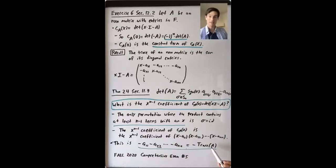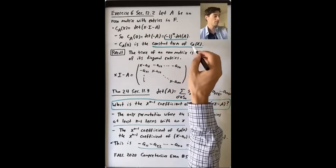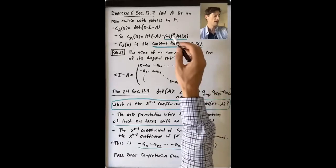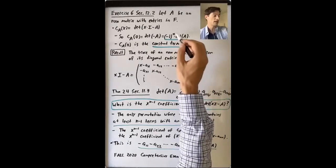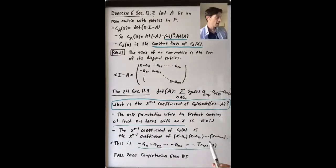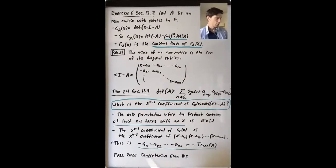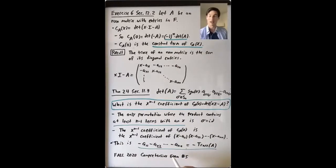So we're seeing that the constant coefficient of the characteristic polynomial is (-1)^n times the determinant of the matrix, and the X^{n-1} coefficient is minus the trace — minus the sum of the diagonal entries. This is a really good argument to know; it came up on the Fall 2020 Algebra Comprehensive Exam as problem number five.